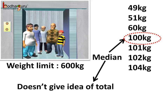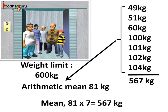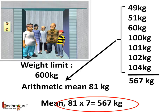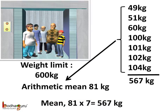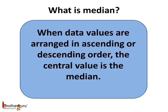In the elevator case, the arithmetic mean represents the data in a better way. If the mean weight is 81 kg, we get a good idea of the data. The total weight would be 81 multiplied by 7, which equals 567 kg — much less than the weight limit of 600 kg. So we can easily tell the total weight hasn't exceeded the limit.